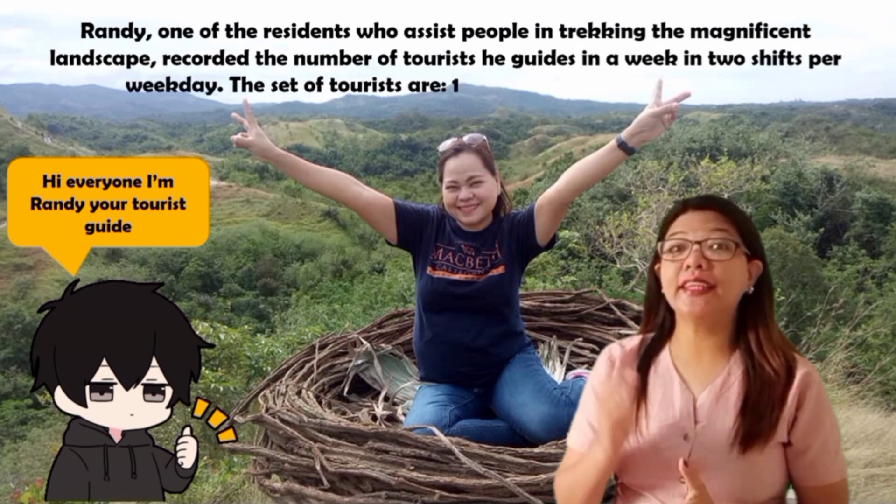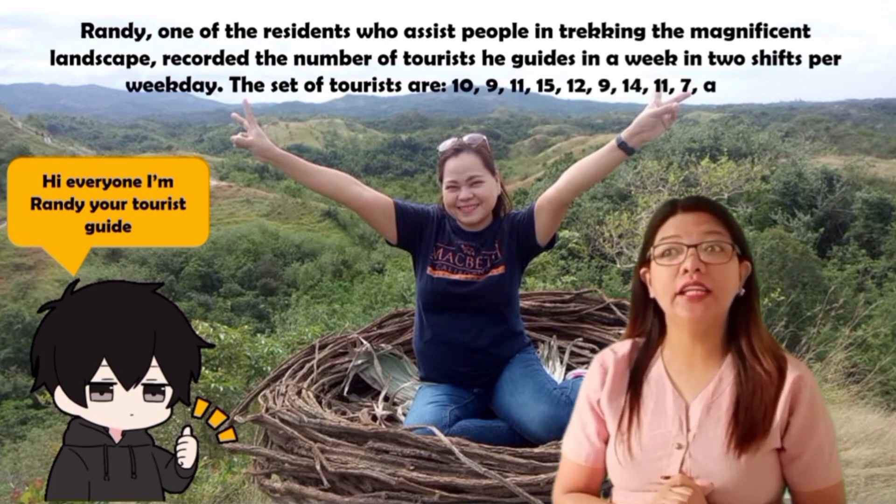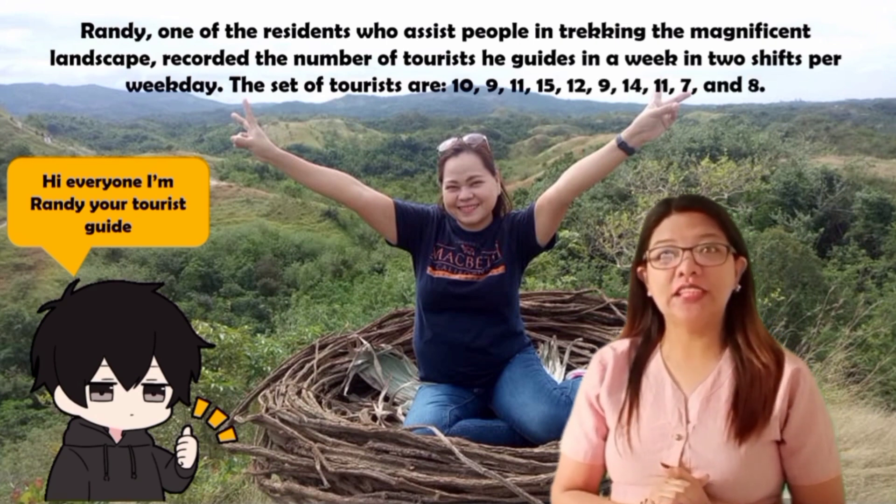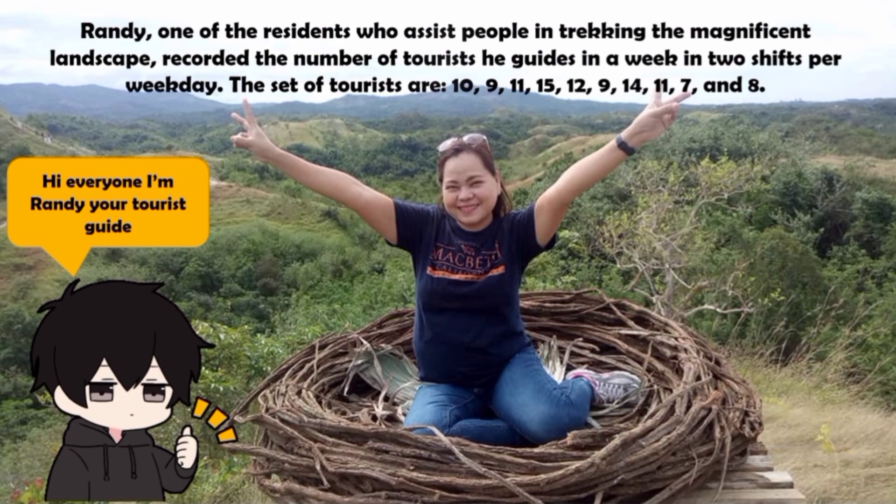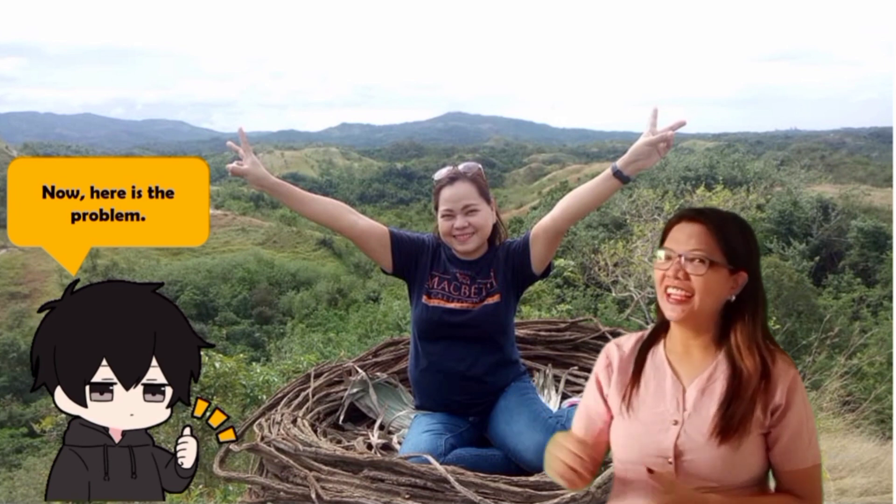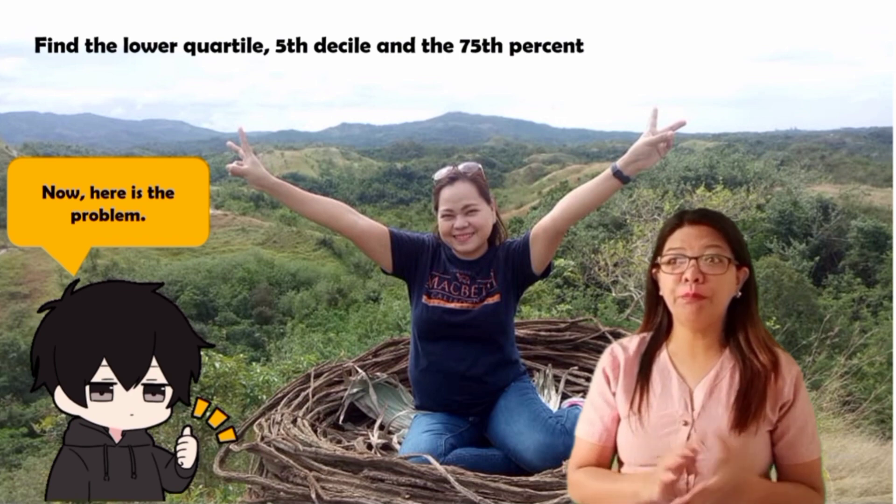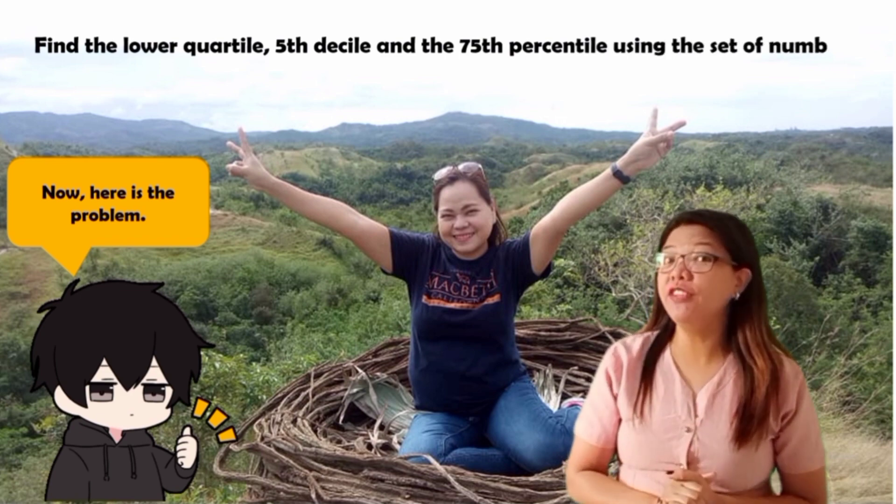The set of tourists are 10, 9, 11, 15, 12, 9, 14, 11, 7, and 8. Now, here is the problem. We have to find the lower quartile, fifth decile, and the seventy-fifth percentile using the set of numbers.